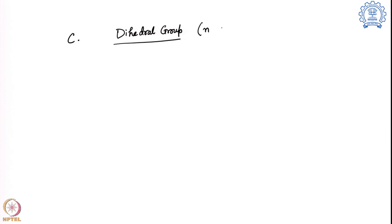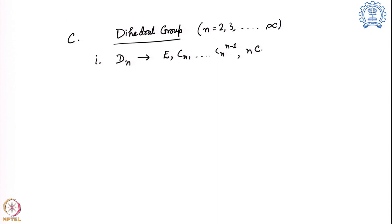The third category is the dihedral groups, again using integer n (2, 3, ... up to infinity). The point group Dn has E and Cn through Cn^(n−1) — similar to Cn so far — but critically, it also has n number of C2 axes perpendicular to the principal axis Cn. This presence of n C2 axes perpendicular to Cn is what defines a molecule as belonging to the dihedral groups.